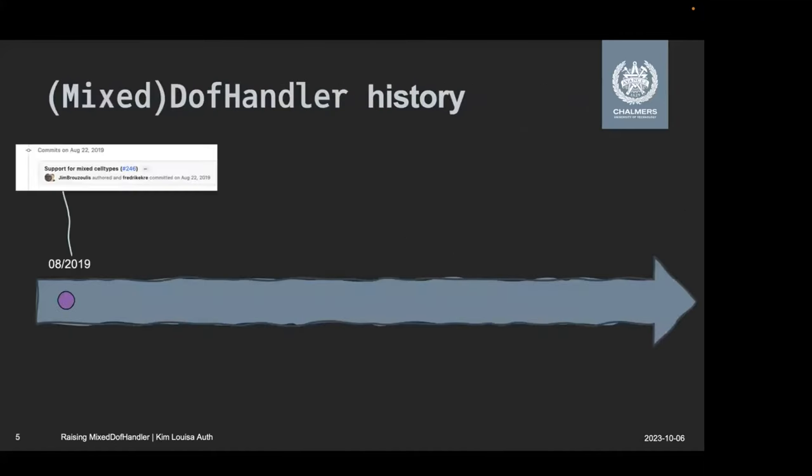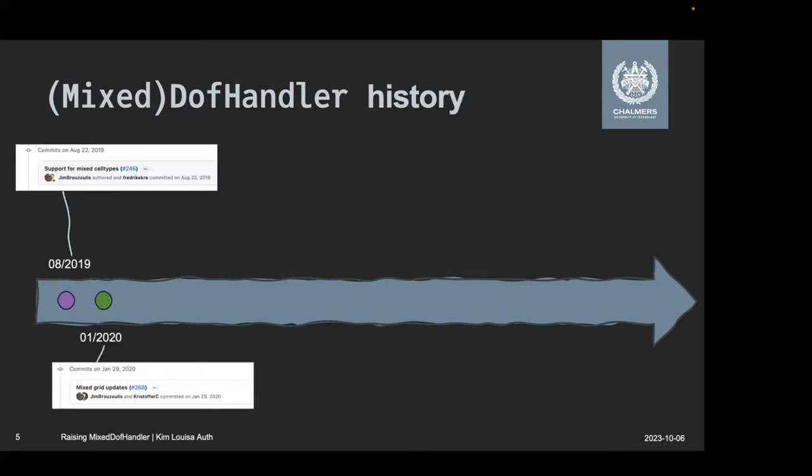Okay, let's go to the history then. Because all of this has actually been possible to do with ferrite ever since August 2019, when something called mixed DofHandler was introduced. And we quite quickly got some improvements to that. The state at this point is that we have DofHandler that is there to distribute degrees of freedom, but it cannot do mixed grids or fields on subdomains. It is, however, pretty performant and pretty nicely written. And then we have mixed DofHandler, which is in a very experimental state. It can do these fields on subdomains and mixed grids. But it has some caveats. It doesn't really support the same syntax. And we don't really know about performance.